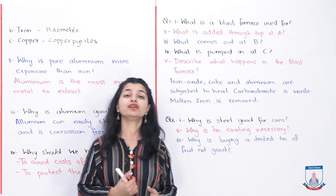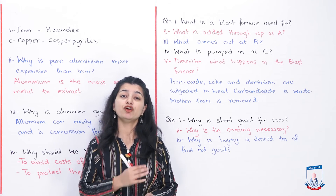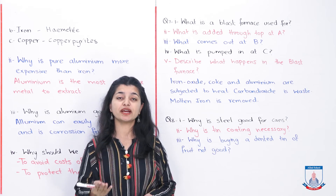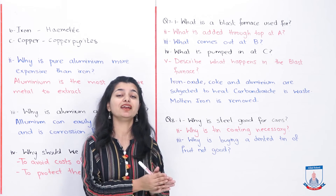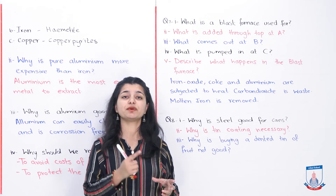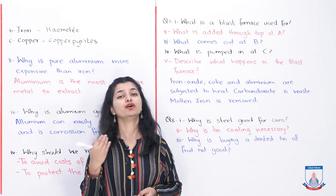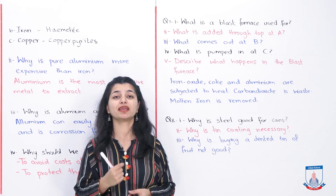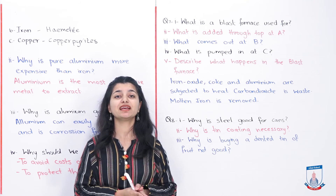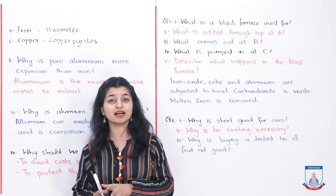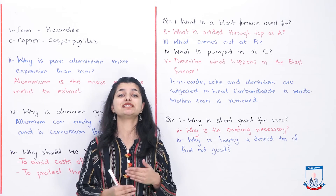The second part asks: why is tin coating necessary? Tin coating is used to prevent corrosion. Tin is less reactive than iron, so when steel — which is mainly iron — is coated with tin, the tin layer protects it and prevents the iron from corroding. That is why we coat steel cans with tin.